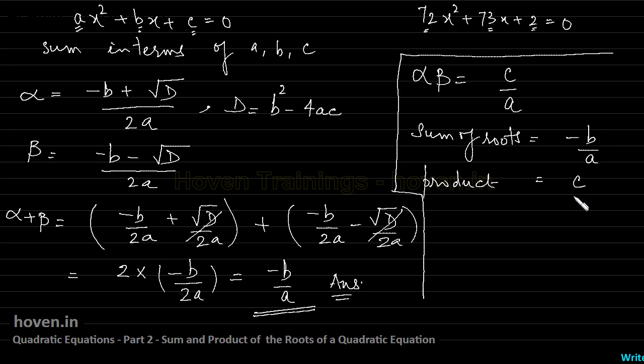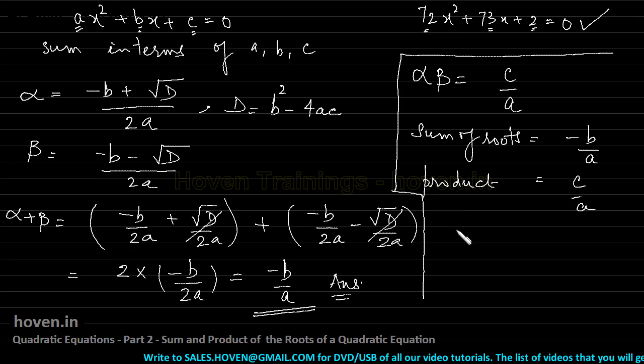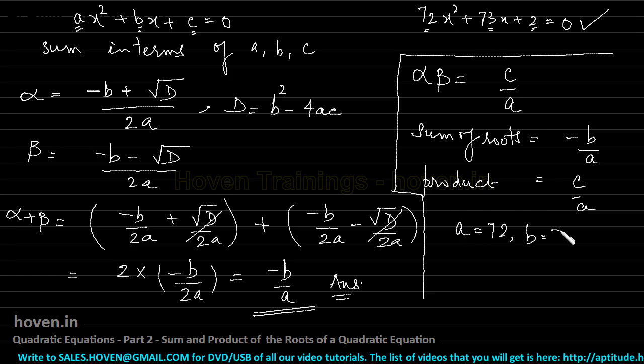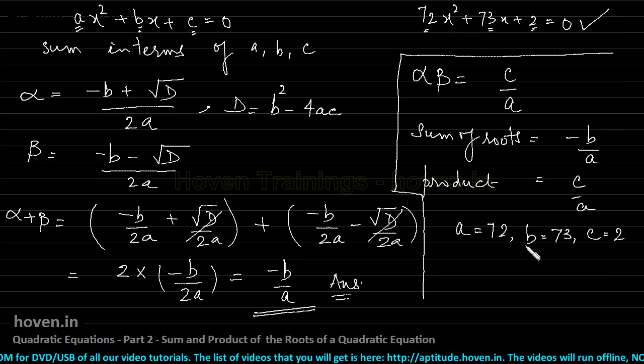So let us now apply our newly obtained knowledge to this tougher question. The sum of roots we can see is minus b by a. So let us first of all isolate a, b and c from this equation. We see that a is 72, b is 73 and c is 2. So we can compare this equation with this one and we find that these are the values of a, b and c.